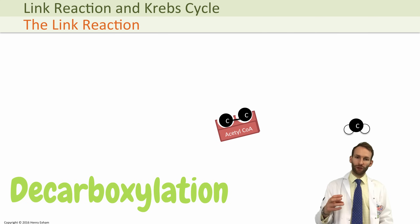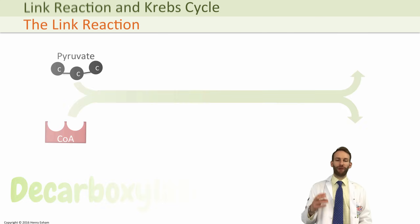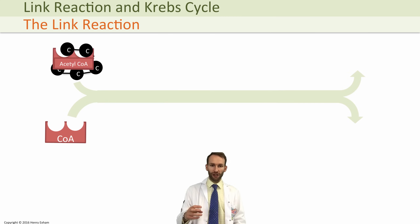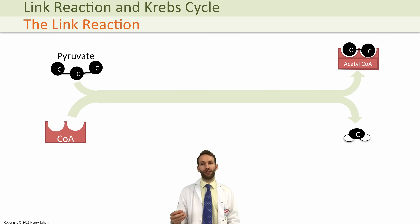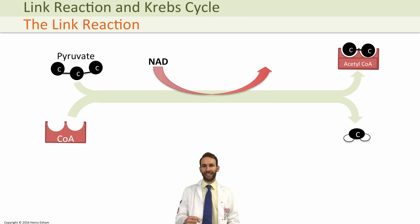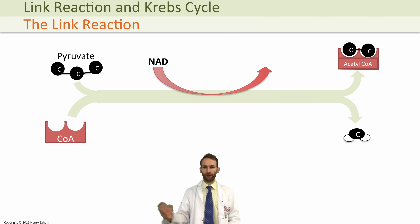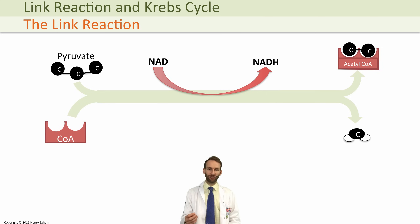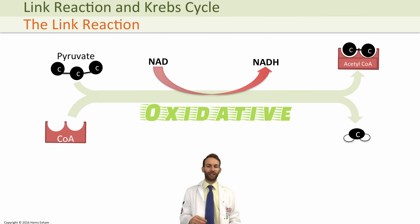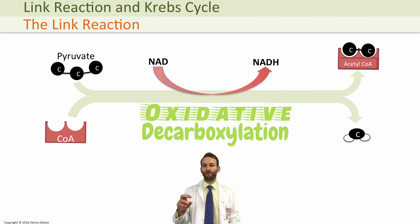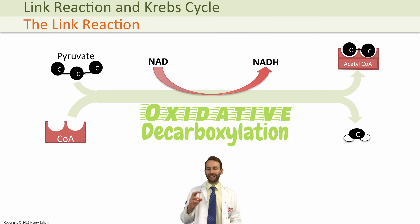When you decarboxylate pyruvate, something else happens as well. The pyruvate is actually oxidized by giving its hydrogens to NAD — the hydrogen acceptor that we saw in glycolysis has come back again here. We're going to use NAD to take some hydrogens off pyruvate. The NAD is becoming reduced to make reduced NAD, or NADH, and the pyruvate is becoming oxidized. That's why this link reaction is known as oxidative decarboxylation.